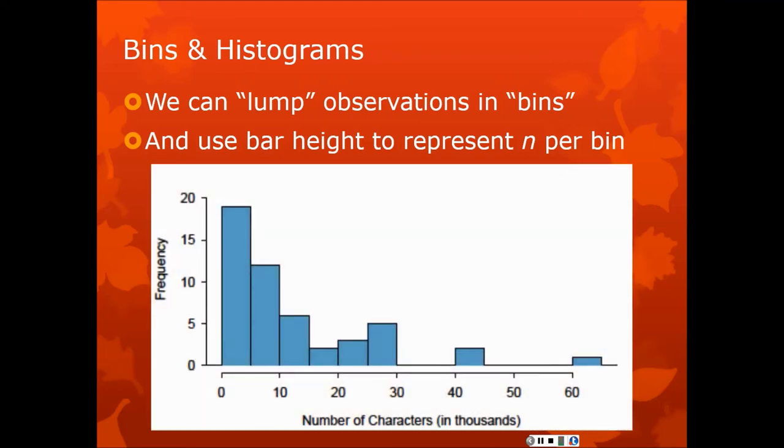And then we use the bar height to represent the number of observations per bin. So here's the email data set as a histogram. They chose to have one category from 0 to 5 characters, another one from 5 to 10. You'll notice there are some categories that didn't get any, because once you start, you've got to follow it through. You can see that there are 5 or maybe 6 emails that have between about 10 and 15 characters in them. So you need to learn how to read histograms. It's going to be a very important skill for the semester and for life.